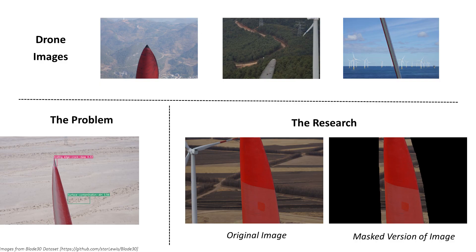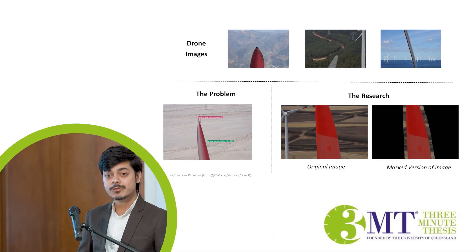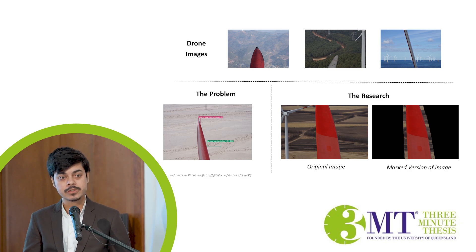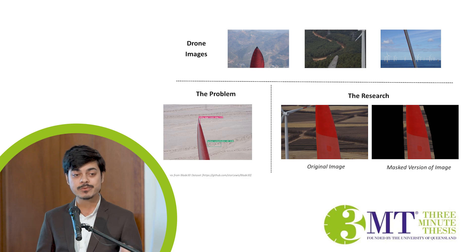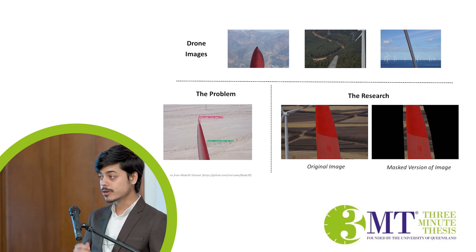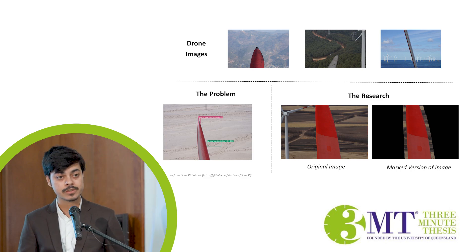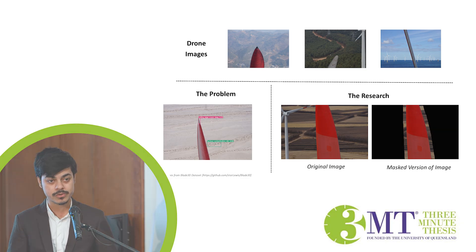The drone images that you see over here are potentially saving human lives. Wind turbine technicians remain at a significant risk of fatal accidents — it is considered one of the most dangerous jobs in the whole energy sector. In 2020, around 318 accidents were reported related to wind turbines, out of which 9 were fatal and around 118 resulted in documented human injury.